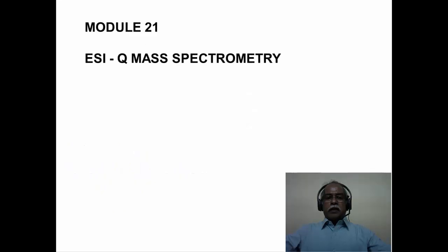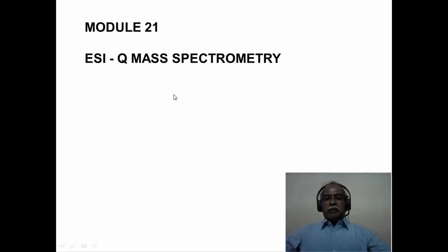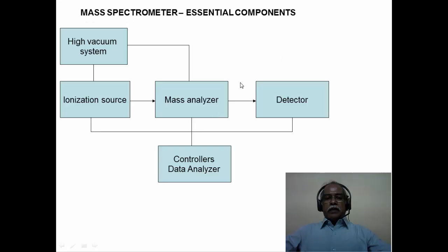Electrospray ionization mass spectrometry as an ionization source combined with a quadrupolar mass analyzer is a very powerful combination in mass spectrometry. Many modern spectrometers are equipped with this combination as a standard tool. Mass spectrometry generally uses a very high vacuum system, with the ionization source under high vacuum of the order of 10 to the power minus 6 or minus 7 torr.